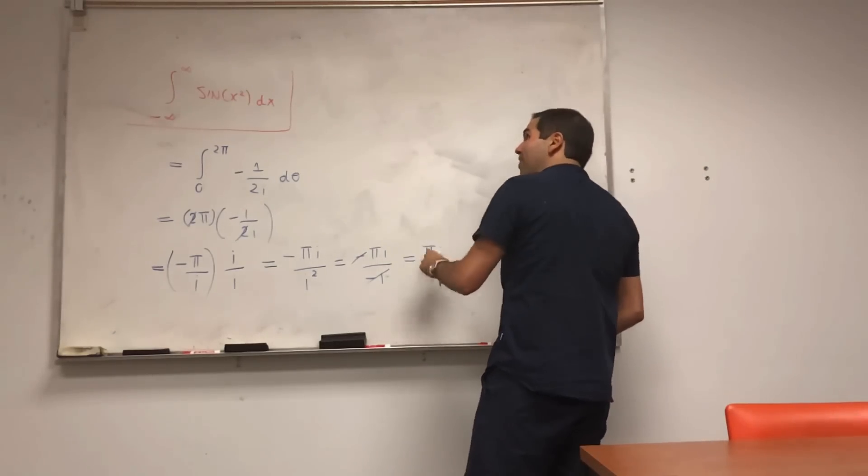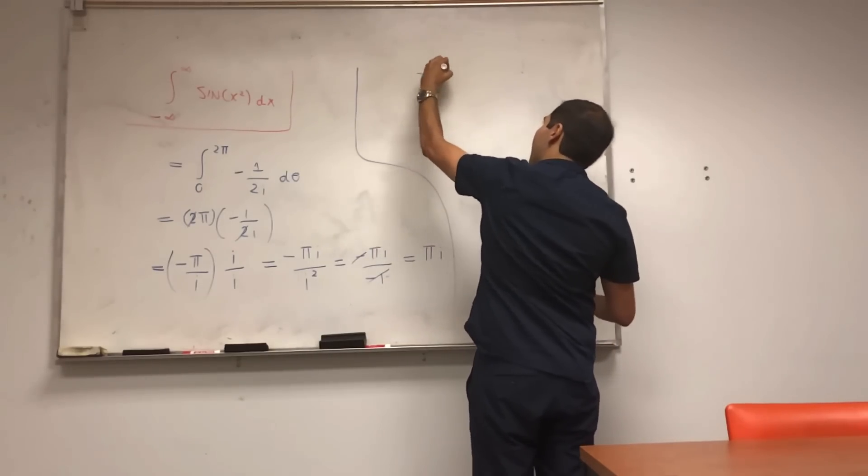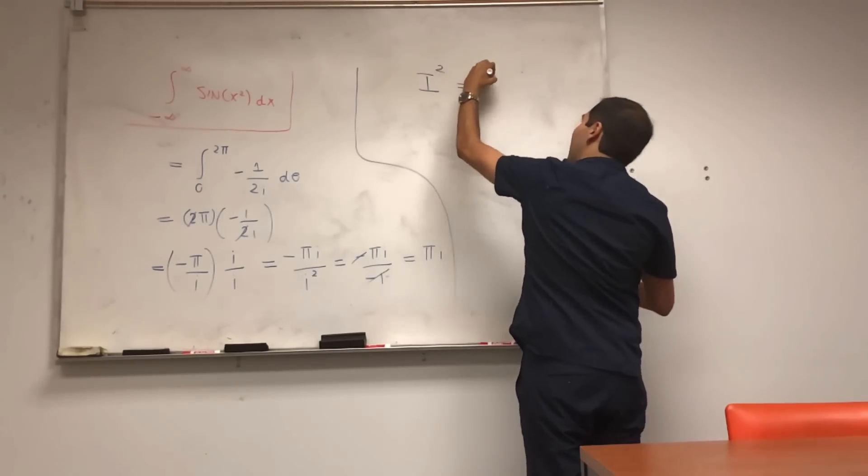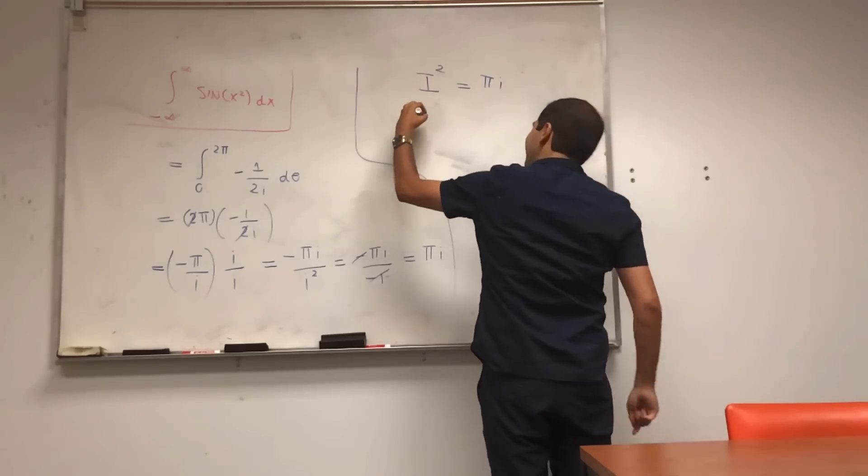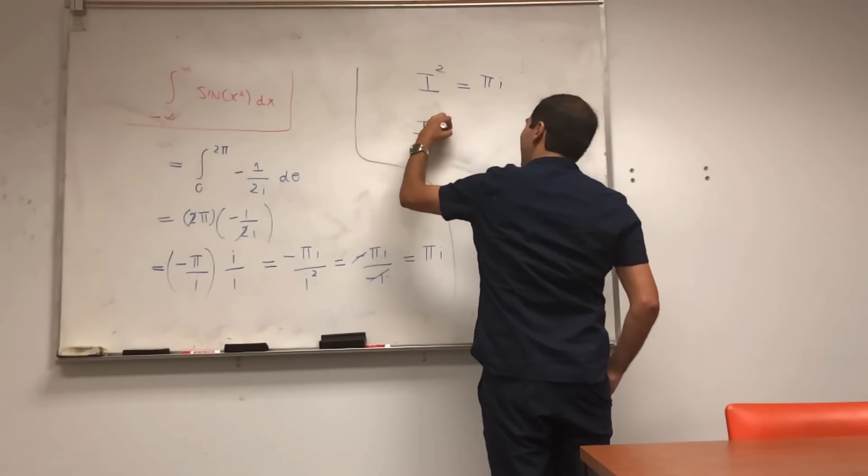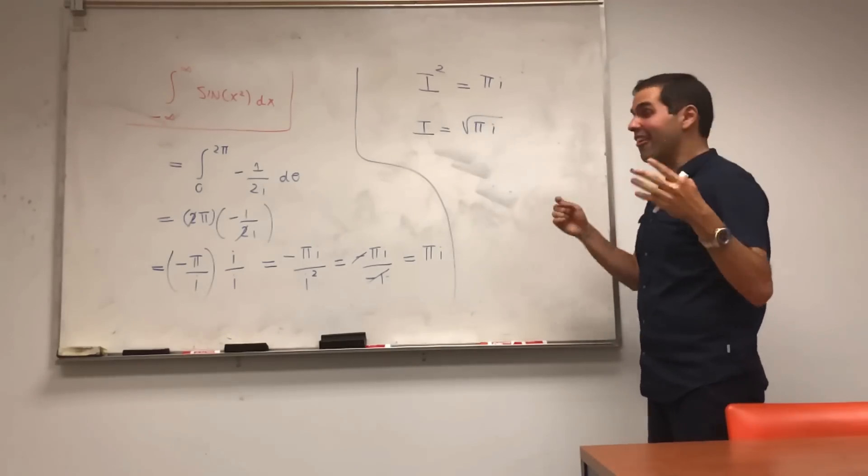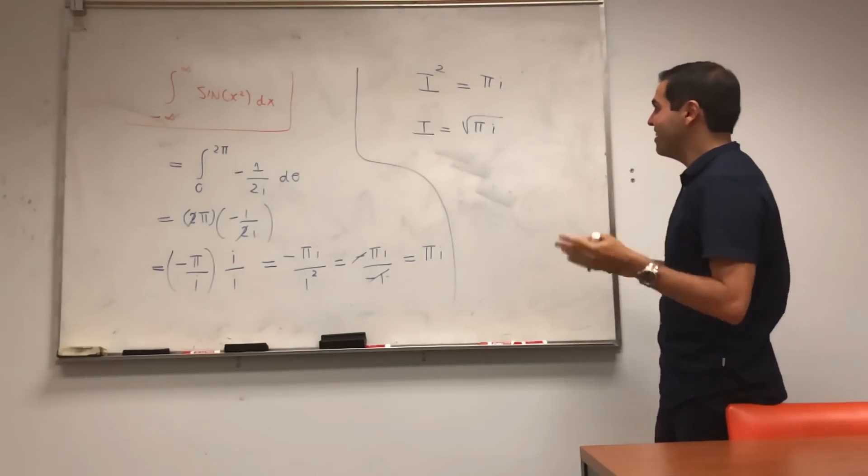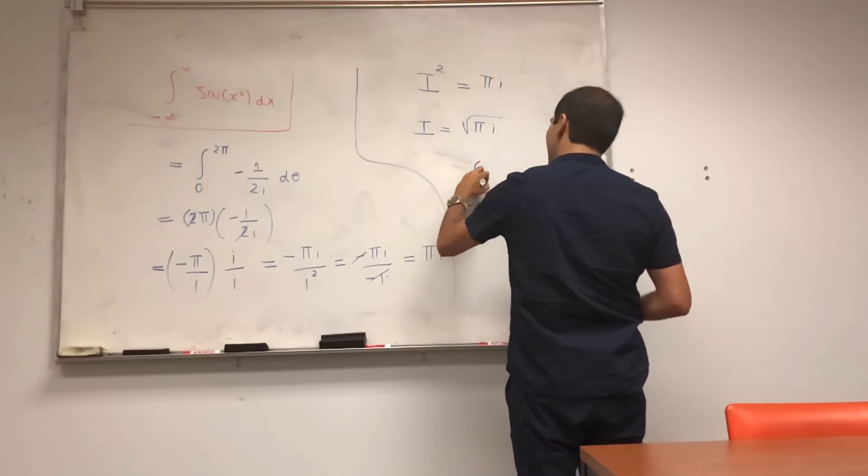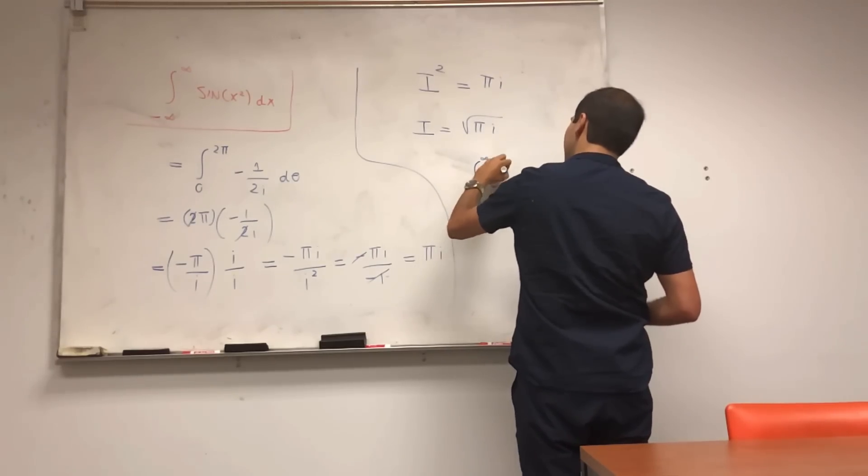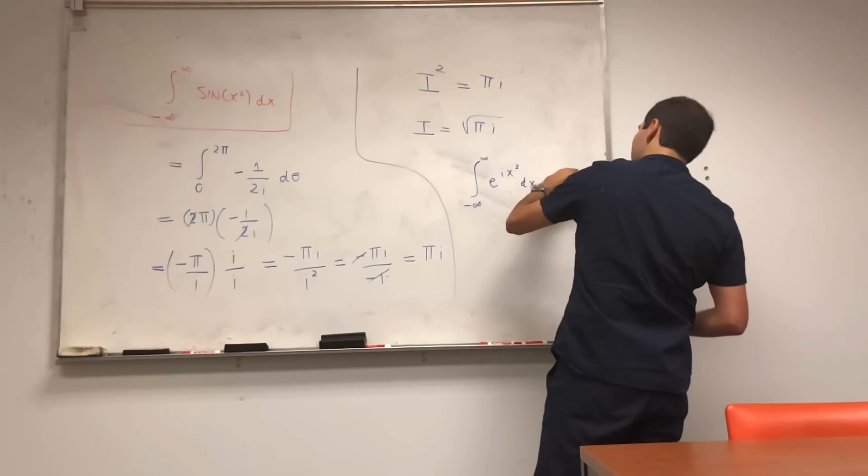So one thing I guess we can do is multiply both sides by i, and we get minus pi i over i squared, and so we get minus pi i over minus one, the minus cancel out, and we get pi i. And so, in the end, what did we have? We have that I squared equals to pi i, and again, let's just assume that this gives us I equals to square root of pi i.